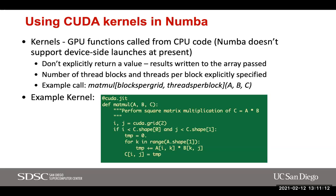To use CUDA kernels in Numba: GPU functions (kernels) are called from CPU code. Numba doesn't currently support device-side launches. Kernels don't explicitly return a value — results are written to the array you pass in. You have to specify thread blocks and threads per block explicitly, following the concept of blocks, grids, and threads per block.